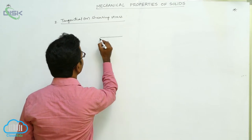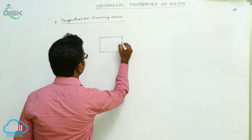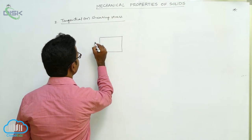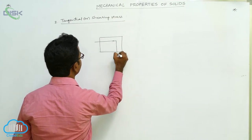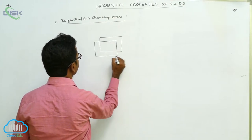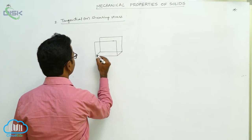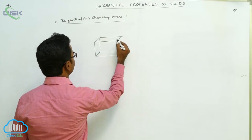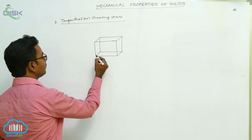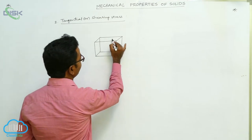For example, let us consider a cube. This is a cube. Now on the top surface of the cube, we applied a tangential force F.